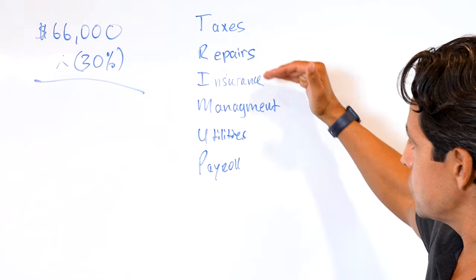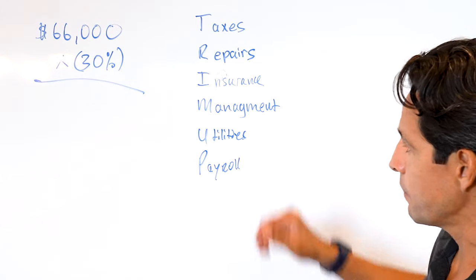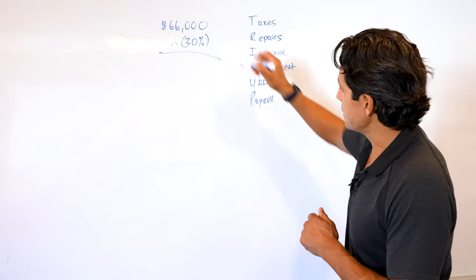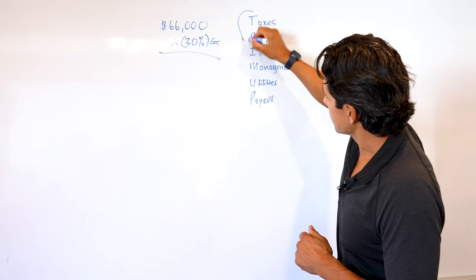This is something I call trim up. So again: taxes, repairs, insurance, management, utilities, and payroll. This is what's included in this operational expense.